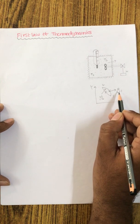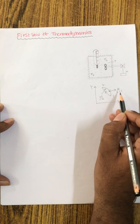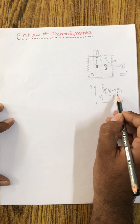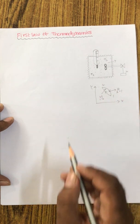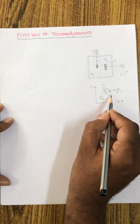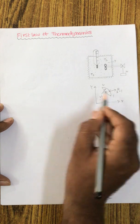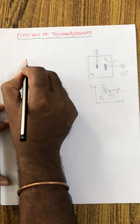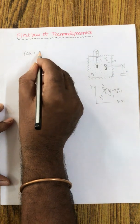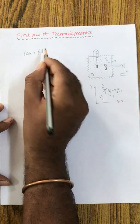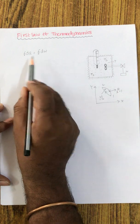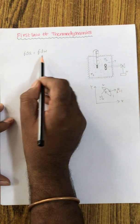That proportionality constant is called Joule's constant or the mechanical equivalent of heat, denoted as J. Now combining processes 1 to 2 and 2 to 1 together forms a cycle. For a cycle, we can write the cyclic integral of dQ equal to the cyclic integral of dW, meaning the amount of heat transfer equals the amount of work transfer for a cycle.